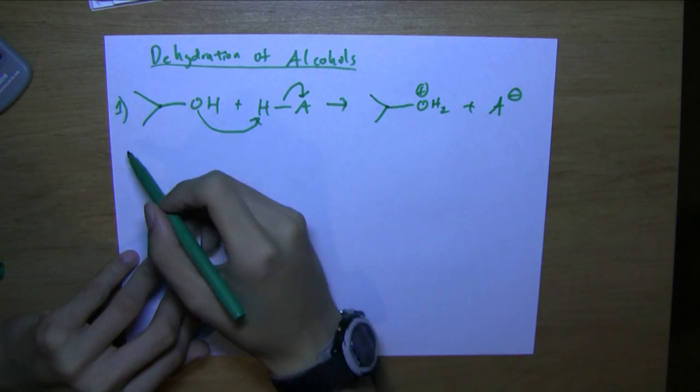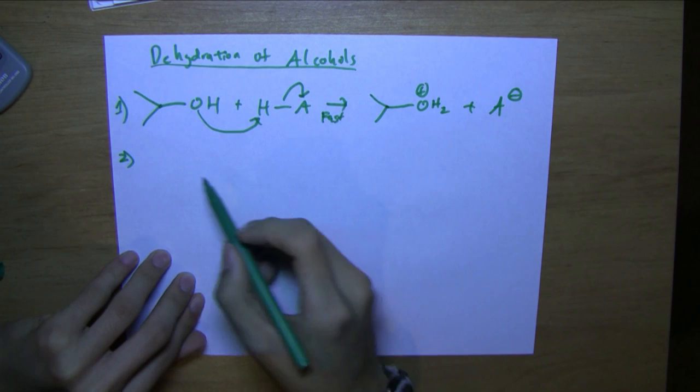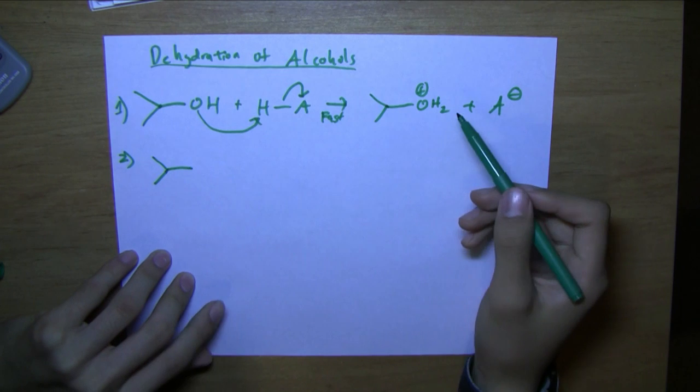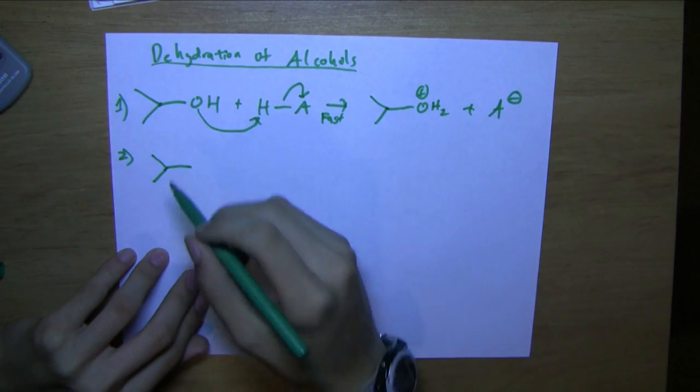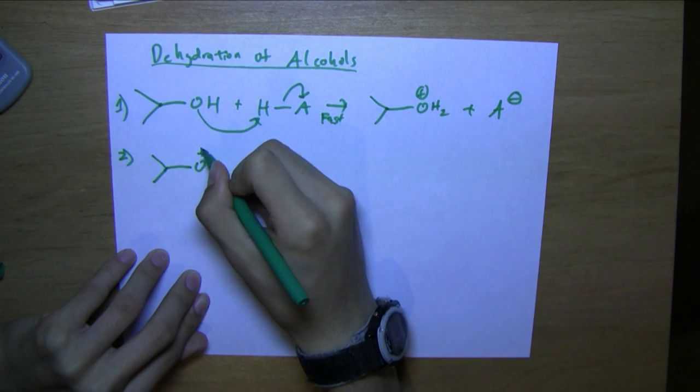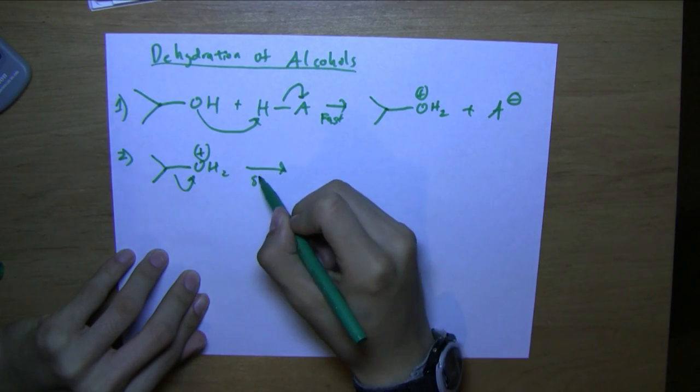And now the second step. Keep in mind that this is the fast step. The second step is where the water group, since water is a good leaving group, would basically just fall off itself. And this is the slow step.